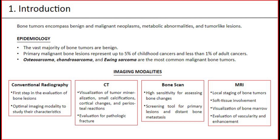Imaging modalities. Number one, conventional radiography, which is the first step in the evaluation of bone lesions and the optimal imaging modality to study their characteristics. Number two, CT, which helps visualization of tumor mineralization, small calcifications, cortical changes, and periosteal reactions, and helps in evaluation for pathologic fracture. Number three, bone scan, which has high sensitivity for assessing bone changes and is a screening tool for primary lesions and distant bone metastases.